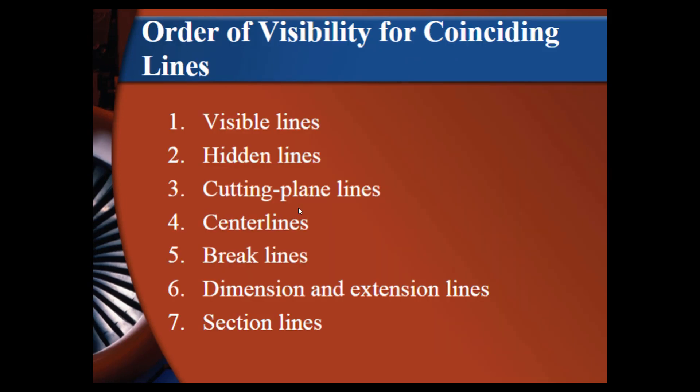Order of visibility for coinciding lines. Sometimes we may have a hidden line and a center line in the same place. So we have to decide which one we want to show. We can't show both because then it most of the time will become a solid line and it can be very misleading. The visibility order is visible lines, or in our case we call them object lines, are the most important lines. And they are typically a solid continuous line. Then hidden lines, because a hidden line is still indicating something on the plane of the object. It needs to be noted and shown very clearly.